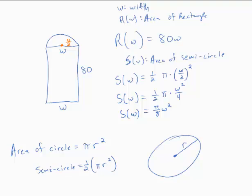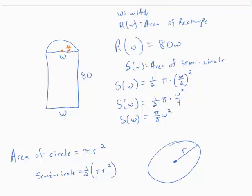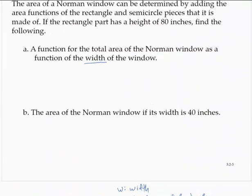So the rectangle is 80W. The semicircle has area given by pi over 8 times W squared.